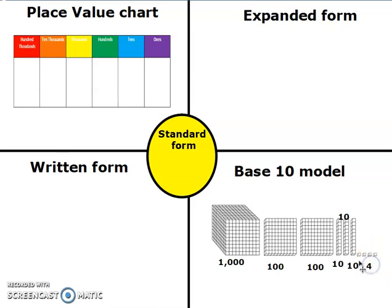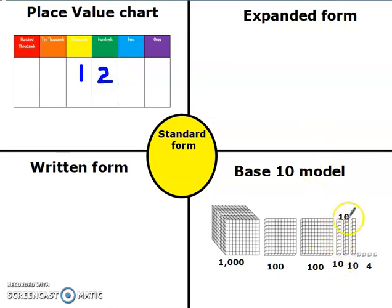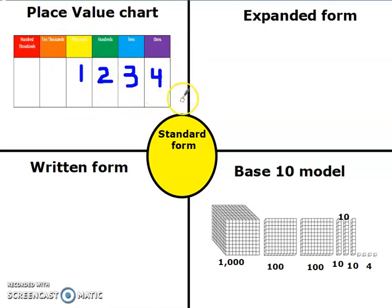So when I'm thinking about this number, I know that I only have one 1,000, so I'm going to write it in the thousands place. Then I have 1, 2 hundreds, so I'm going to write a 2 in the hundreds place. Then I have 10, 20, 30 — so I have three tens — I'll write it in the tens place, and four ones. My place value chart basically tells me what my standard form should look like.